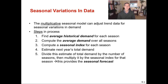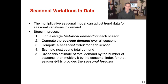We are going to conclude chapter four on forecasting, talking about seasonal variations in data — looking at seasonality and putting together a seasonal index. This is one of my favorite models in the entire chapter, especially if you have a lot of good historical data looking at year-over-year or month-over-month data. This is the multiplicative seasonal model, and we can adjust trend data for seasonal variations in demand, making adjustments and predictions based off of creating an index.